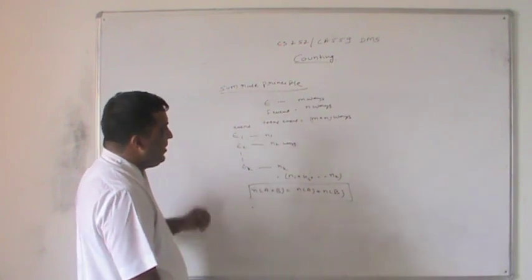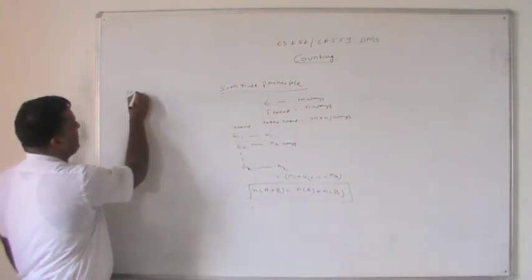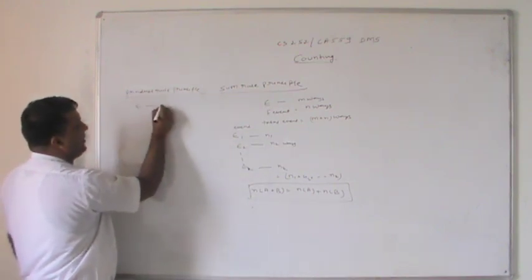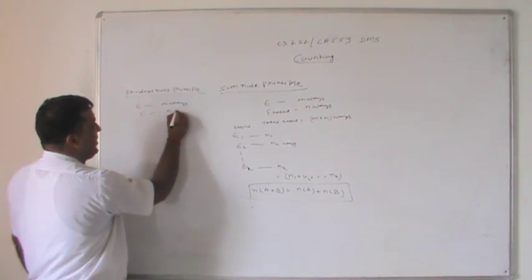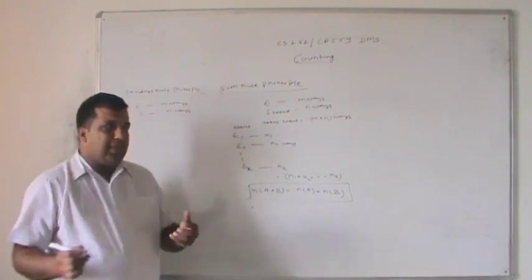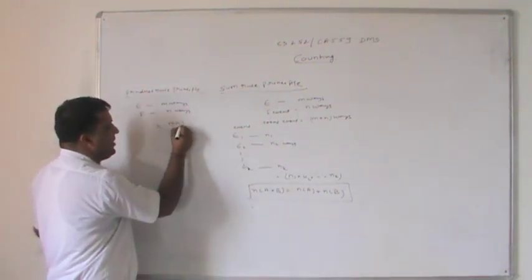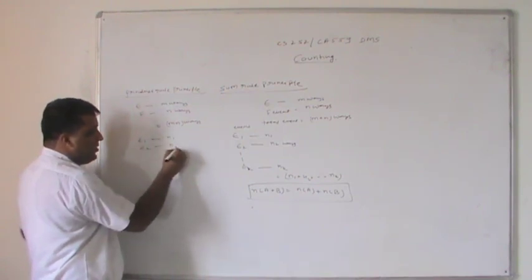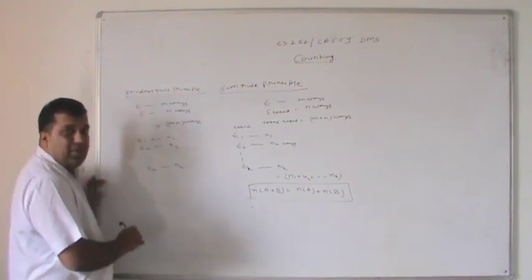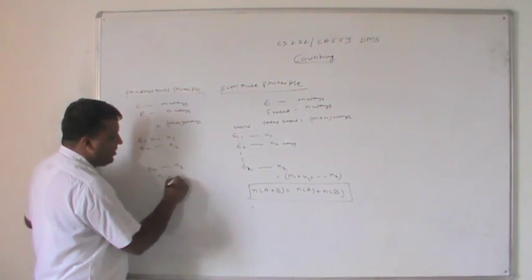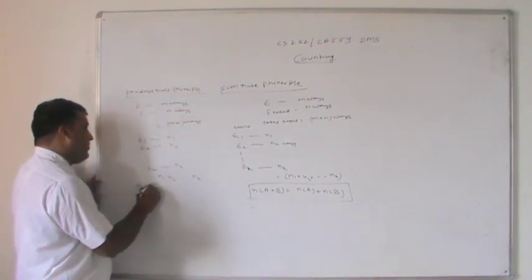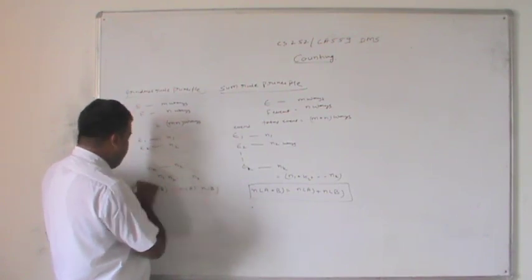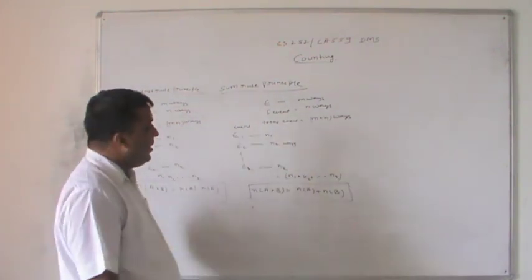Similarly, we can find the product rule principle. The product rule says event E can occur in m number of ways and event F can occur in n number of ways, so the total number of ways is m into n. Similarly, E1 occurs in n1 ways, E2 in n2 ways, up to Ek in nk ways, so total is n1 into n2 up to nk. The Cartesian product n of A cross B equals n of A times n of B. This is the product rule.